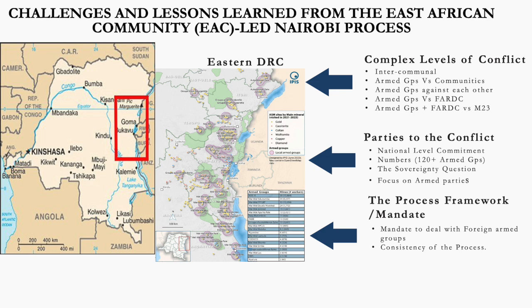Another challenge concerns the parties to the conflict — who do we include? There are groups at the national level, groups controlled at the regional level, and internationally. There is also the sovereignty question: the EAC-led inter-Congolese dialogue is purely a DRC process. It is for them to decide who is included. It is not the East African Community's place to say we must include armed group X, Y, or Z — and that is where the challenge lies.